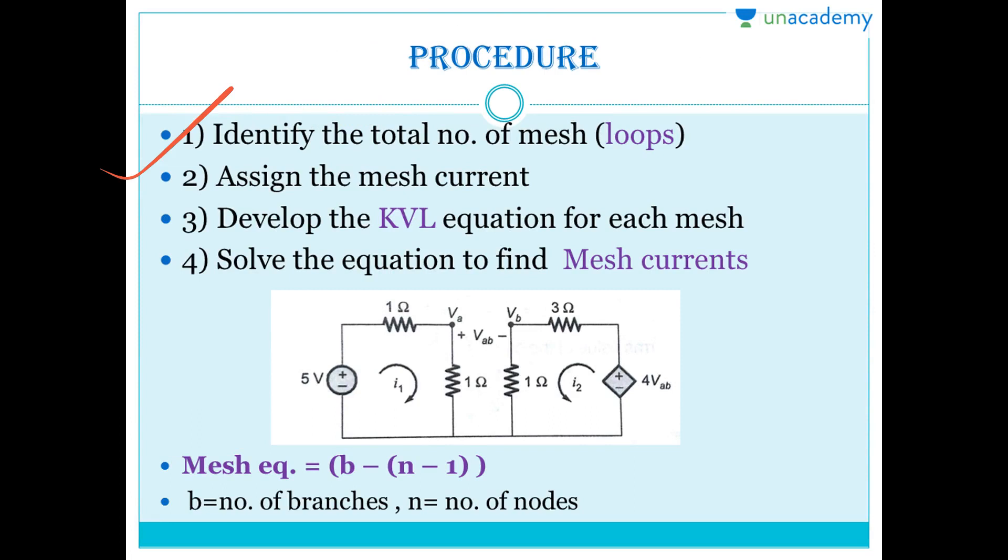What is the procedure? First, identify the total number of meshes or loops in the circuit. Here there are two closed loops. Second, assign them mesh currents. I am assigning I1 and I2. You can take any direction according to yourself. Third, develop the KVL equation for each mesh. For each loop, we will develop a KVL equation, and you know how to write a KVL equation. Now solve the equations to find these mesh currents. How many mesh equations are actually required? There is a formula: b minus n plus 1, where b represents the number of branches. In a branch, any circuit element is connecting, this whole part is known as a branch. Node is a point where 2 or more than 2 elements or branches are connected.